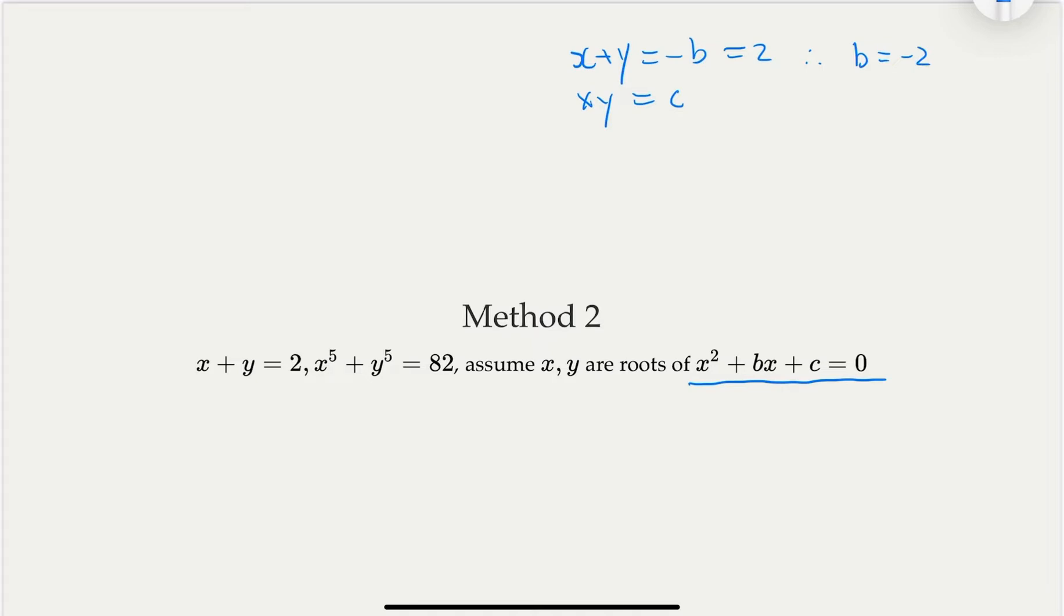So recall last time, we have this recurrence relationship of s_n. What is s_n? s_0 equal to 2, s_1, in this case two roots are x and y. s_2 would equal x squared plus y squared, so on and so forth. And we're given x^5 equal 82. This is given to us.